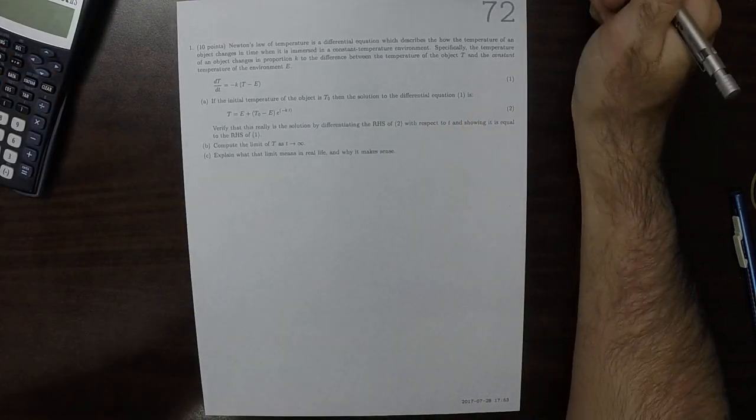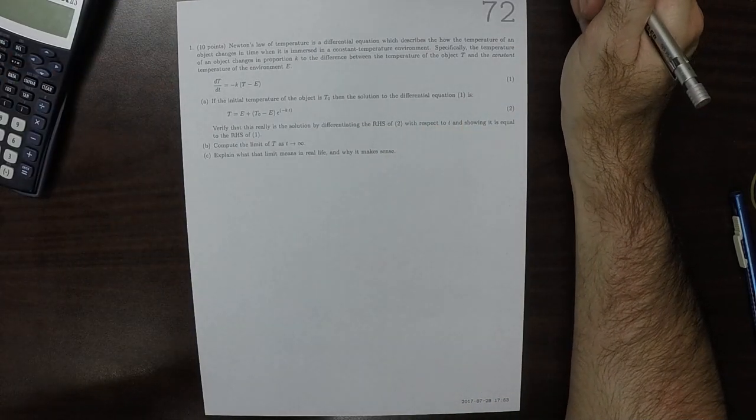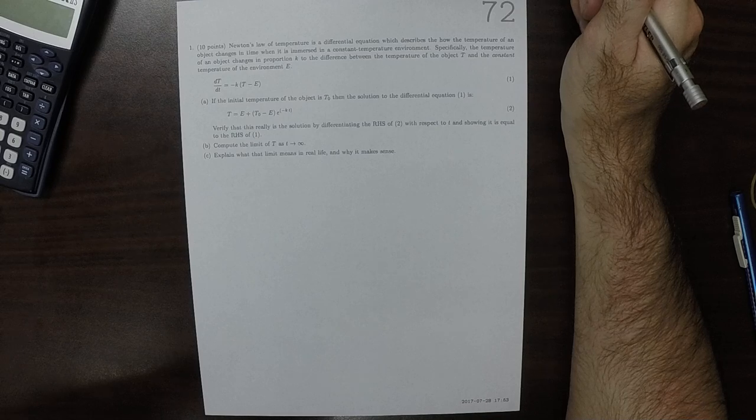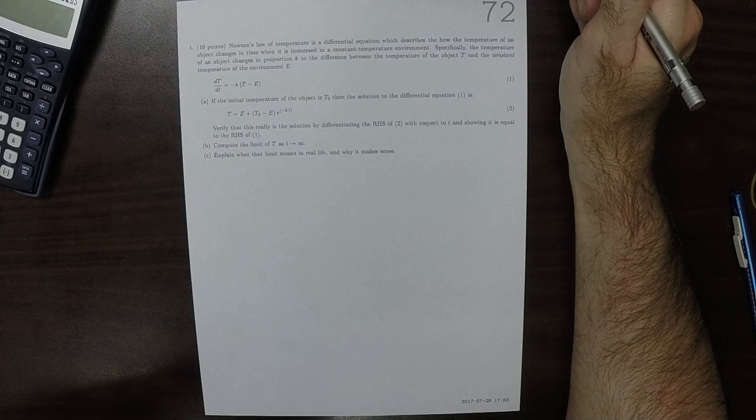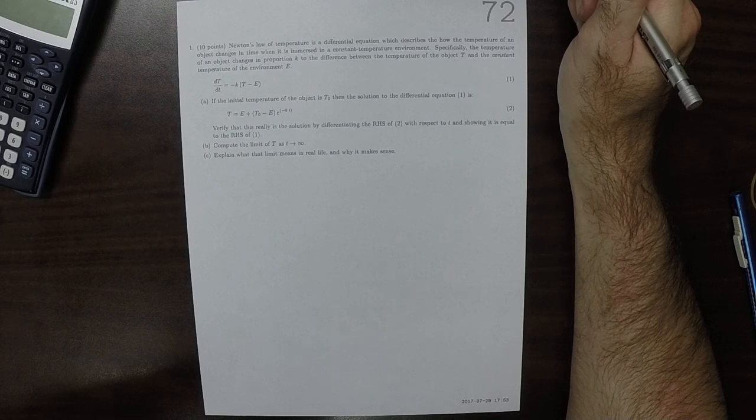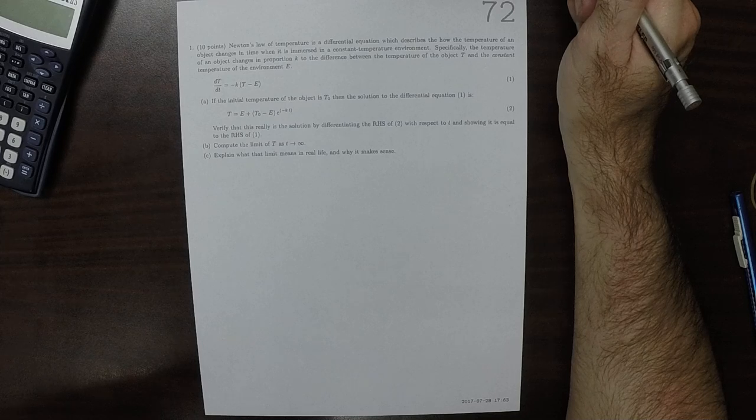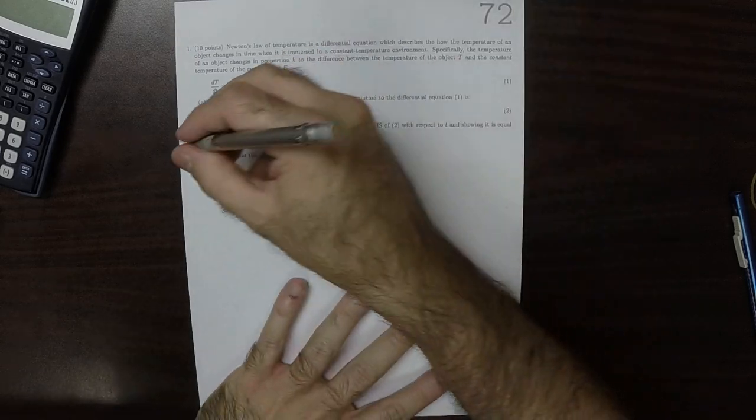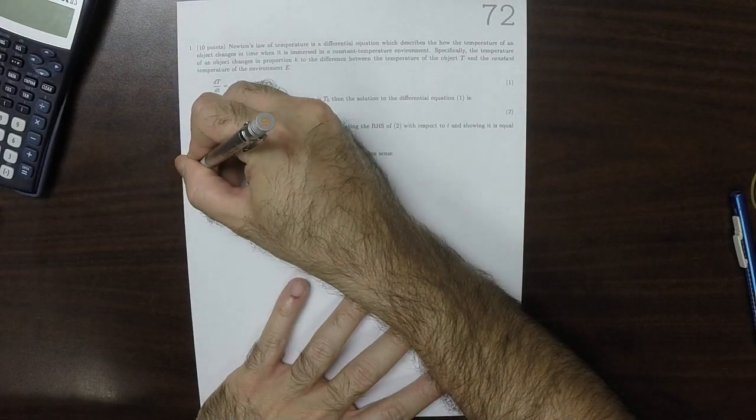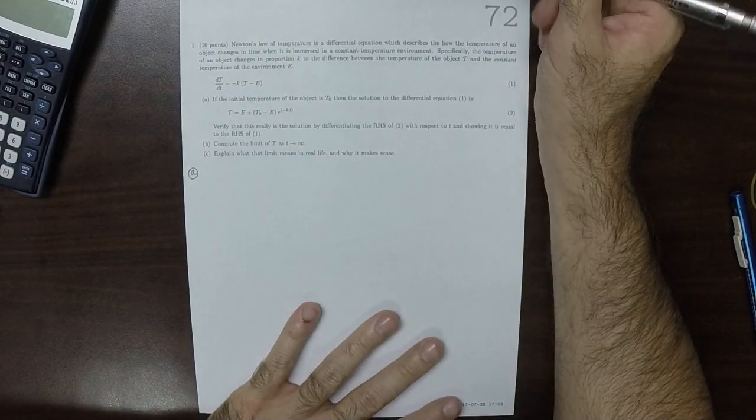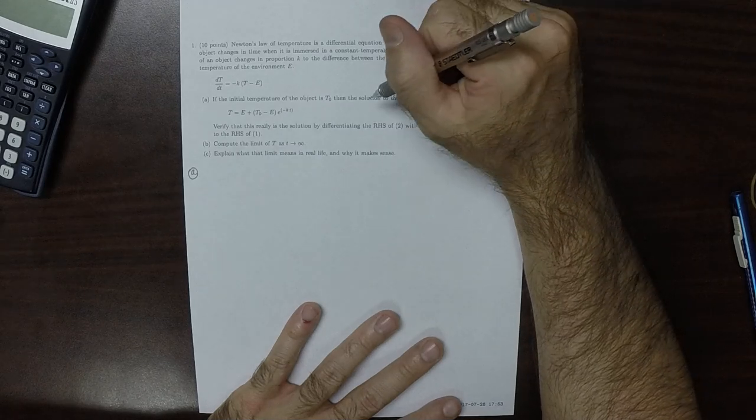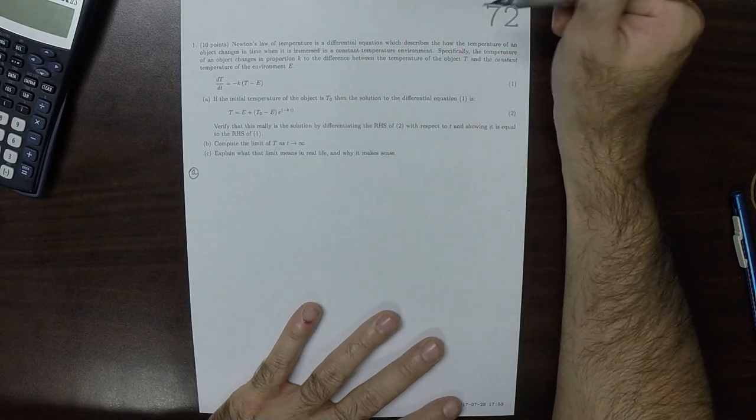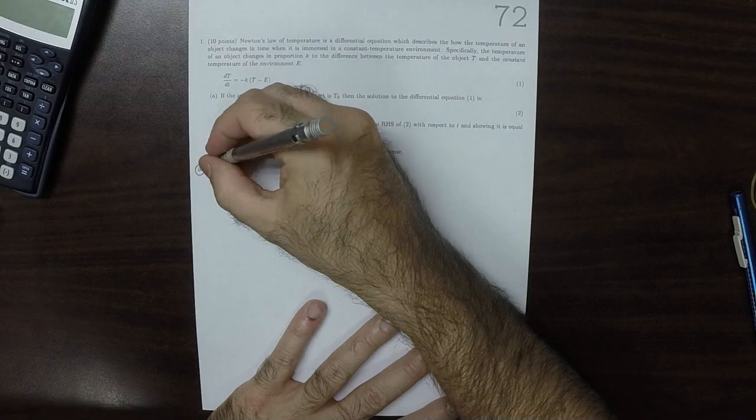This is the solution to Written Homework 72. For Part A, it says differentiate the right-hand side of equation 2. So then...